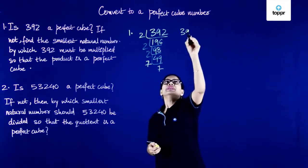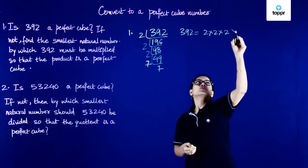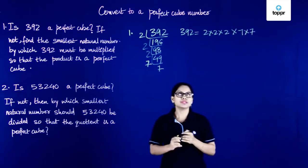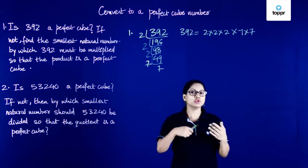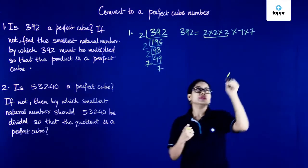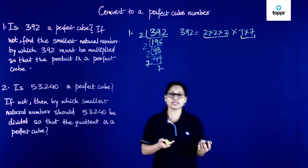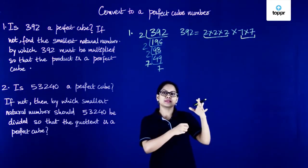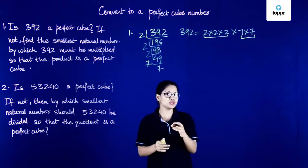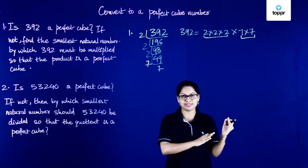So 392 can be written as the multiplication of its factors. Now, if we decide to find the cube root of 392, we have a group of three 2's but we have a group of only two 7's. So this is definitely not a perfect cube because we do not have the prime factors in triplets.